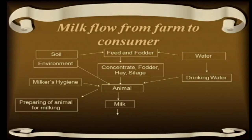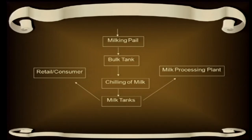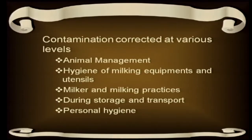Let us look at the milk flow. The animal takes feed and fodder, concentrates, and water; the environment, milker's hygiene, and preparation of the animal for milking all play a role. The milk is collected into the milking pail, then stored in a bulk tank, then chilled, and then it goes to either retail consumers or a milk processing plant. This is the flow diagram — the milk chain from production level to consumption level. Contamination can occur at various levels: animal management, hygiene of milking equipment and utensils, milker and milking practices, storage and transportation, and the personal hygiene of the milker.